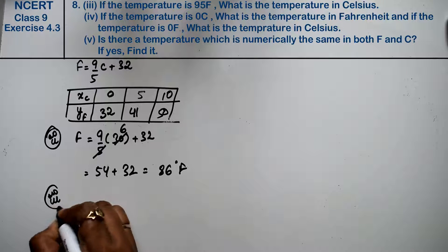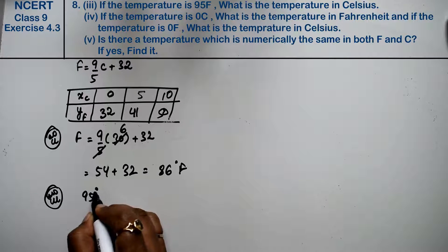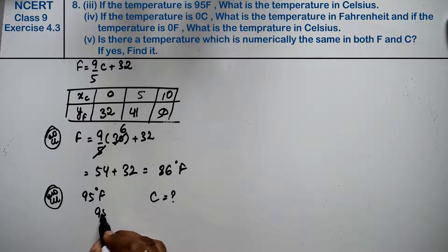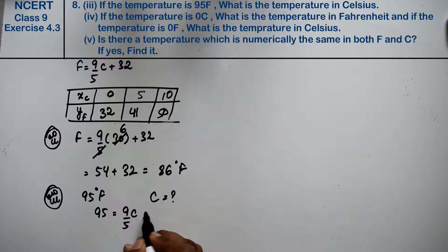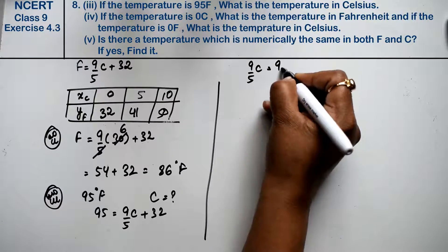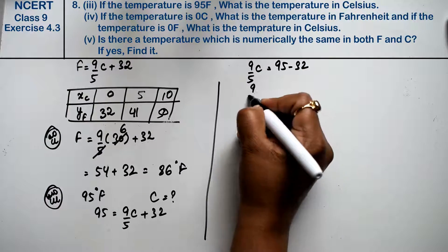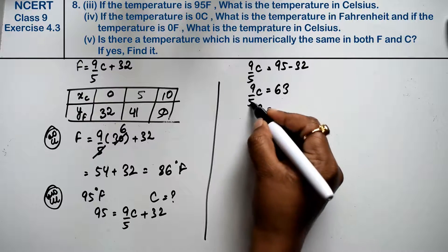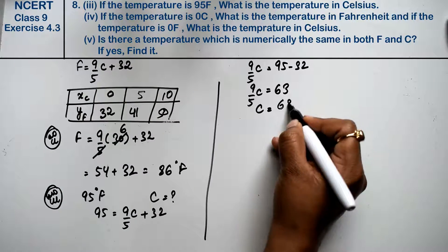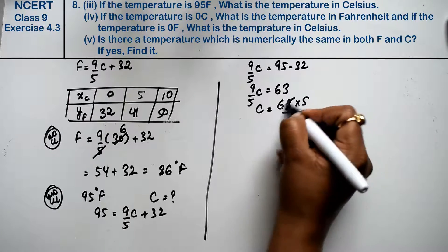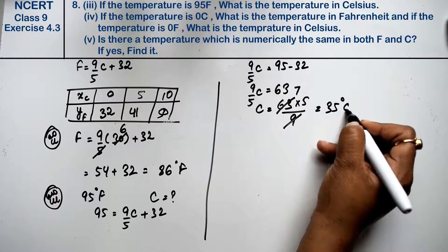Let's do third part. In third part he says that if it is 95 degree Fahrenheit, then Celsius how much? So we write 95 equals 9 upon 5C plus 32. Now 32 goes to the other side. 9 upon 5C equals 95 minus 32. 9 upon 5C equals 63. C equals 63 times 5 by 9. What was multiplied will come to divide, and what was divided will multiply. 9 times 7 is 63, that is 35 degree Celsius.